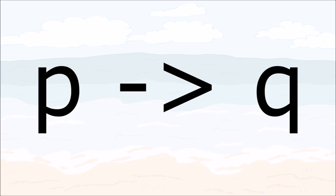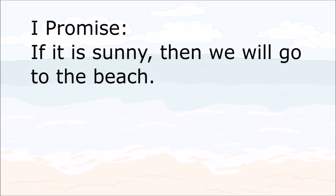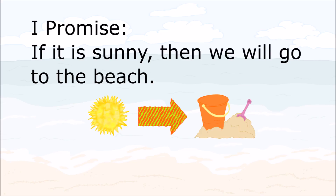P is the hypothesis and Q is the conclusion. Let's talk a bit more about these using an example. Let's say that if the weather is sunny, then we will go to the beach. Let's put that promise into symbols. In a more formal logic problem we would be using P's, Q's, things like that, but here we're going to use pictures. If the weather is sunny, then we will go to the beach.